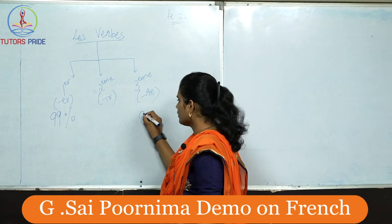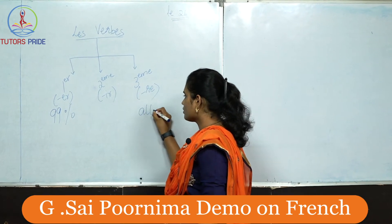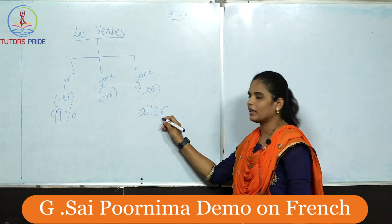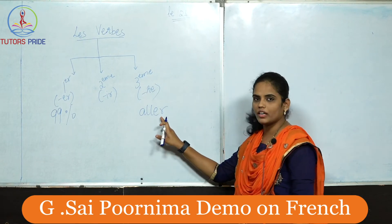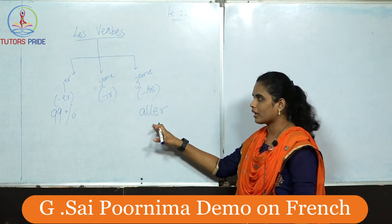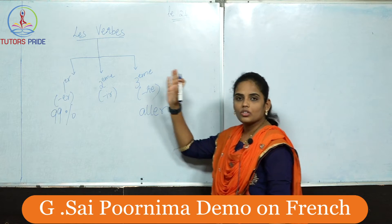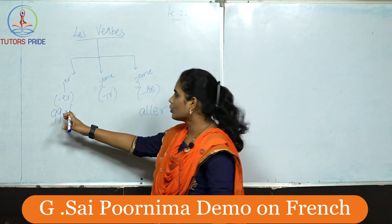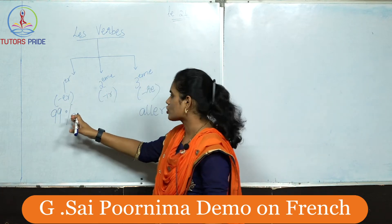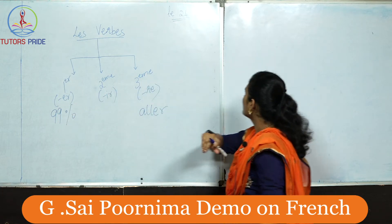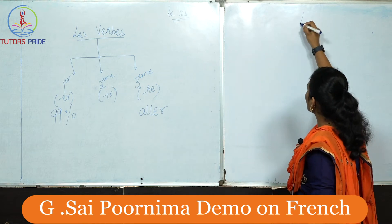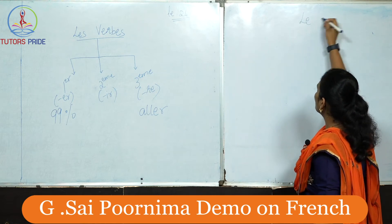For example, 'aller' — this ends with ER but it is not an ER verb; it comes under irregular verbs. So let us do ER verb conjugation in present tense. Here we go.